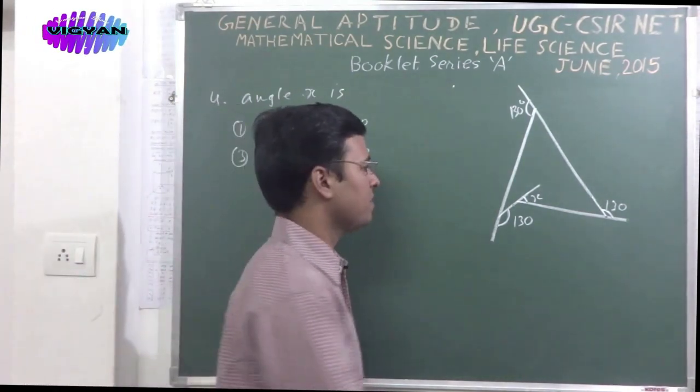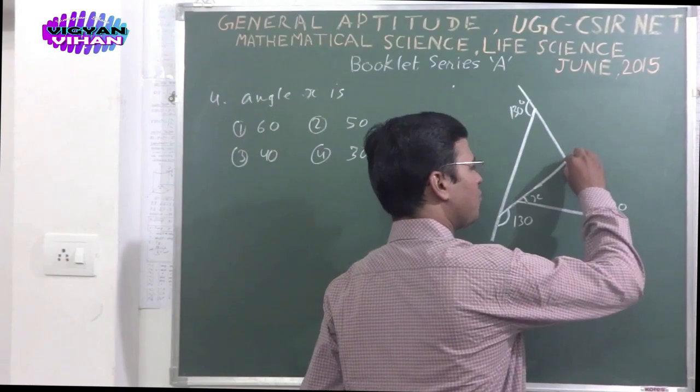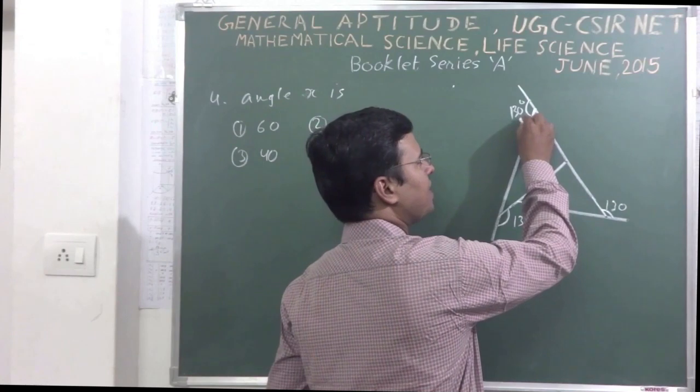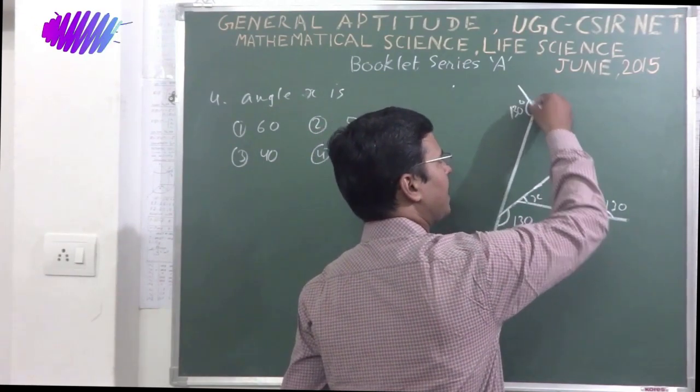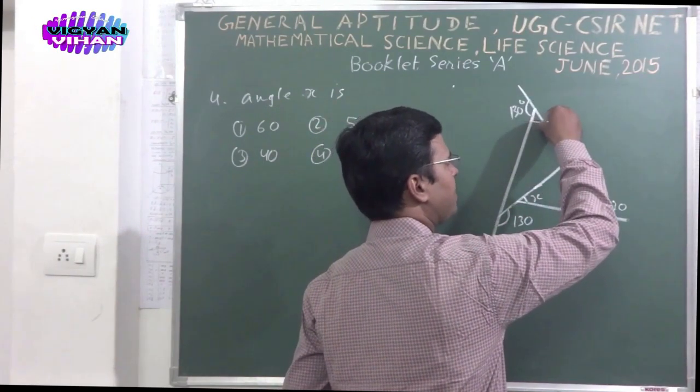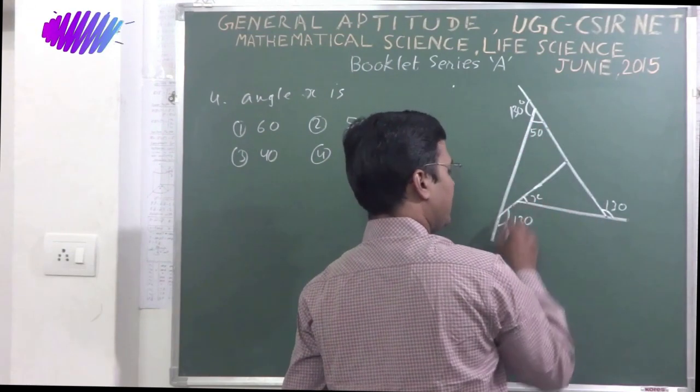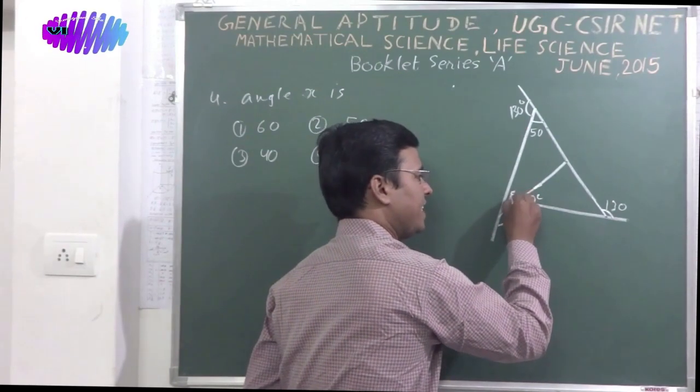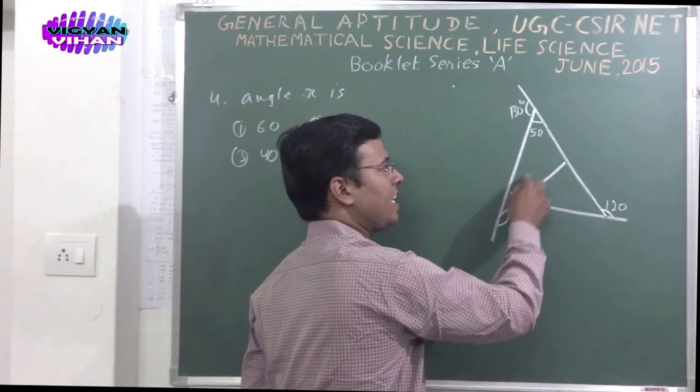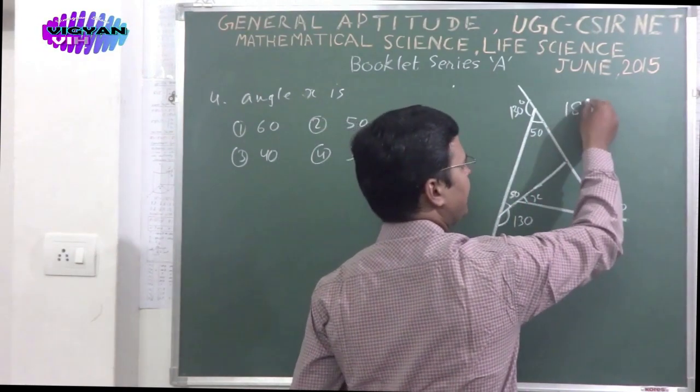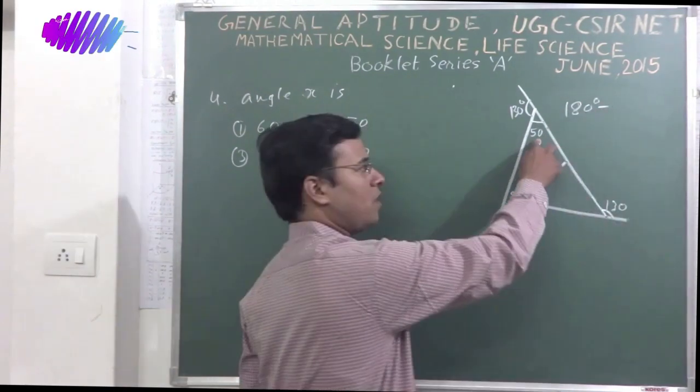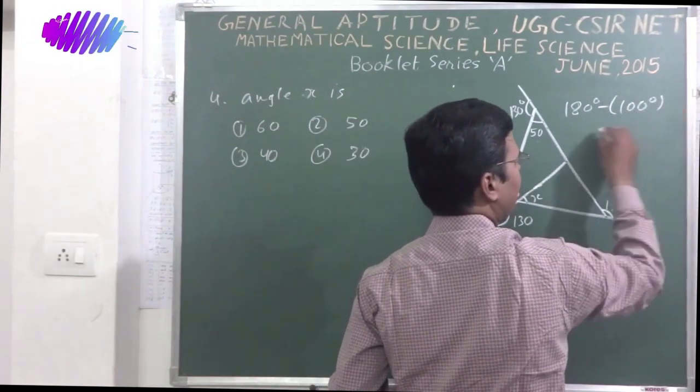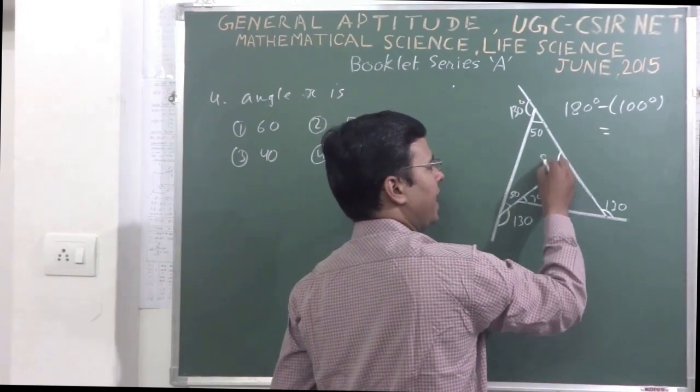Let's start the solution. First increase this line to join the other line. Now this is outer angle, 130 degree. Then the total angle here is 180. The remaining angle is 50 degree. Here also the outer angle is 130. The inner angle would be 50 degree. The remaining angle of this triangle would be 180 degree minus total of 50 plus 50, that is 100 degree. Then the value would be here 80 degree. Now this is outer angle for this triangle.